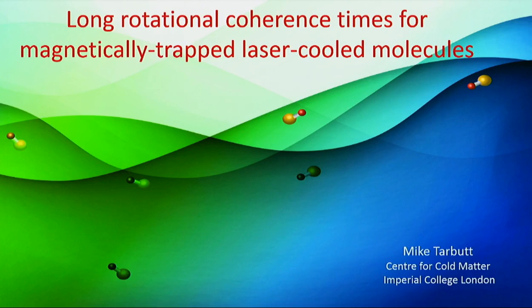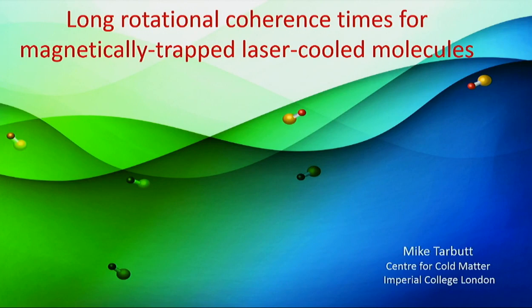As an example, if you want to couple molecules together, you'd like to do that using the dipole-dipole interaction in a controlled way. A good way to do that is to use the oscillating electric dipole moments that you have when the molecules are in superpositions of rotational states — that's what Eric already showed us this morning. So in order to have high-fidelity interactions of that kind, we would like to have long rotational coherence times.